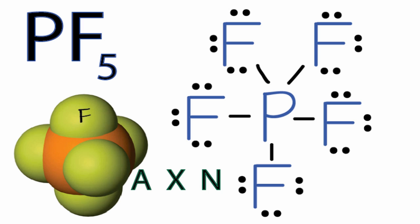We have five fluorine atoms. And N, that's the number of non-bonding electron pairs. Well, all of the electron pairs are involved in chemical bonds with the phosphorus. So we can just ignore N. So we end up with a molecular geometry of AX5.